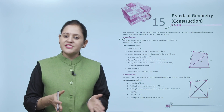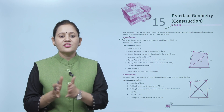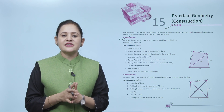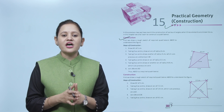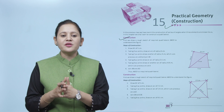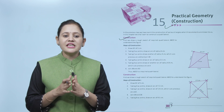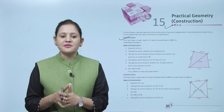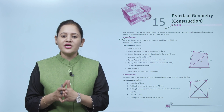First, we draw a rough sketch of the required quadrilateral ABCD to understand the figure. Steps of construction: draw DC = 5 cm. Taking D as a center, draw an arc of radius 6 cm. Taking C as a center, draw another arc of radius 4 cm which cuts the previous arc at B, and join BC. Taking B as a center, draw an arc of radius 3.5 cm. Taking D as a center, draw another arc of radius 4.8 cm which cuts the previous arc at A. Join AB and AD. Thus, ABCD is the required quadrilateral.